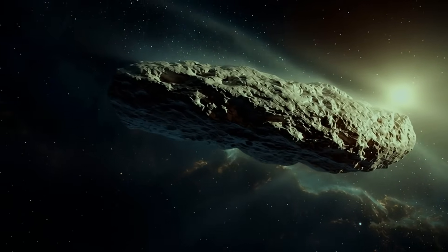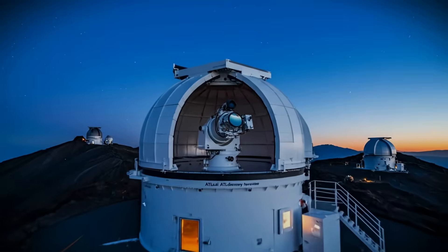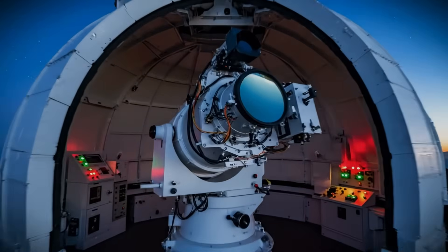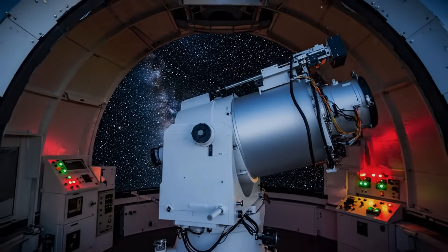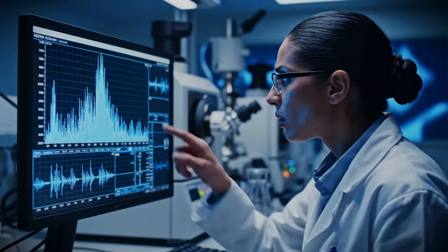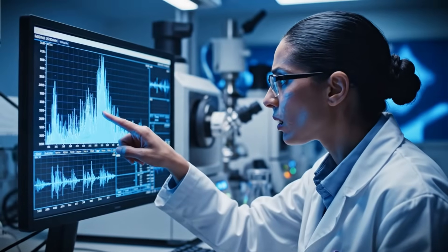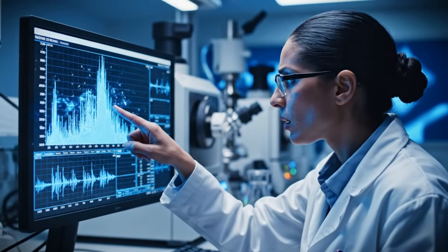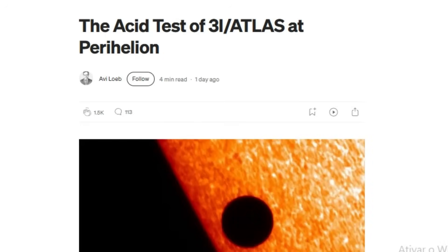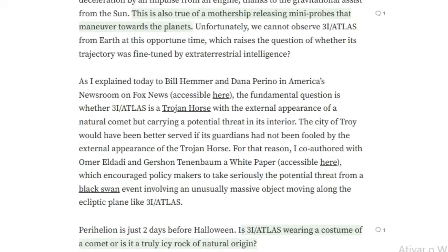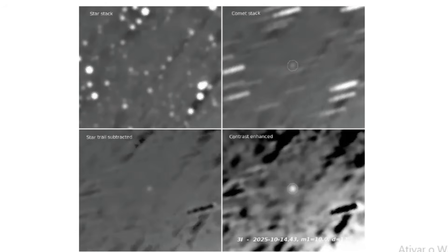First, there's the brightness issue. As Atlas approached the sun, its brightness increased following a power law with an exponent of negative 7.5. For people who don't speak math, here's what this means: normal comets get brighter as they approach the sun following a power of negative 2 to negative 3. Atlas is getting bright much faster than any normal comet, increasing at more than double the rate we would expect. This is completely unprecedented.